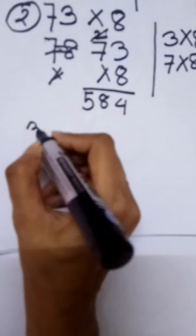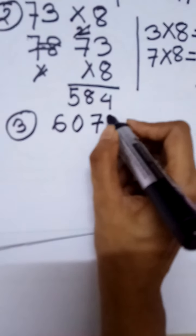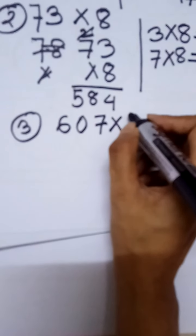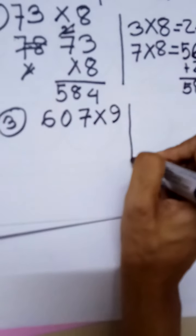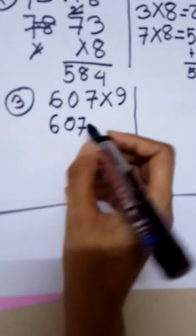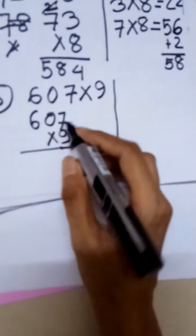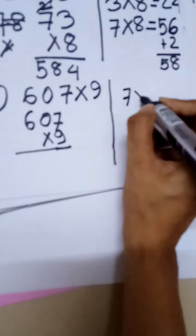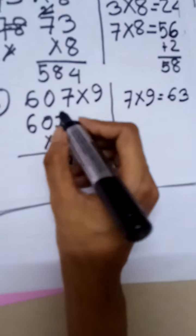Now I am going to solve another one. 607 multiply by 9. As with two-digit multiplication, we have to write it vertically. 7 times 9 equals 63.